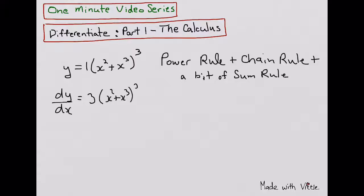Subtract 1 from the exponent, which is a 2, and we multiply by the derivative with respect to x of what's inside the brackets. This is the chain rule part.